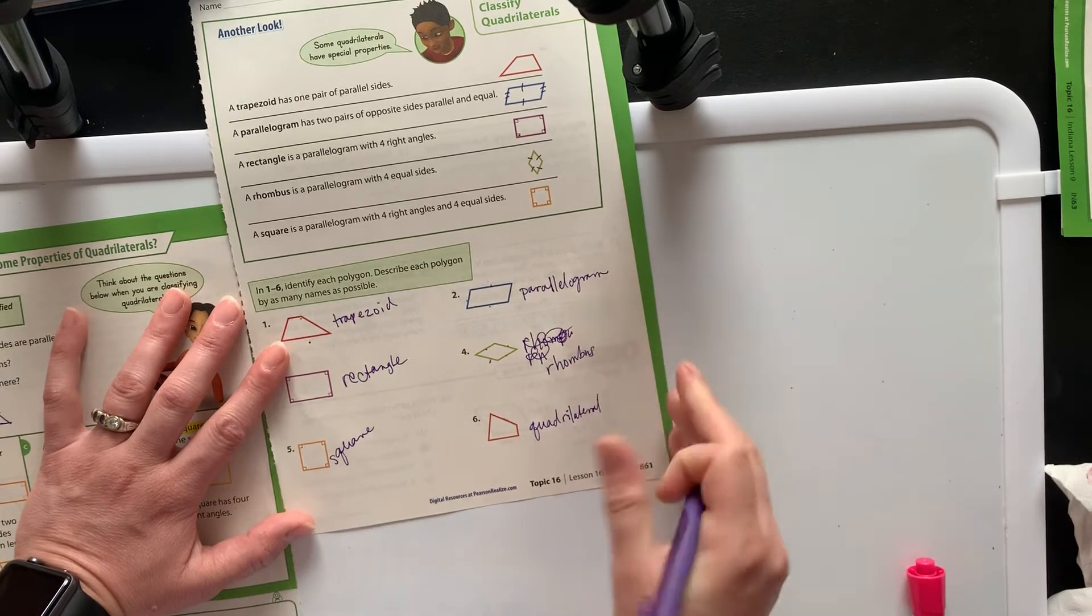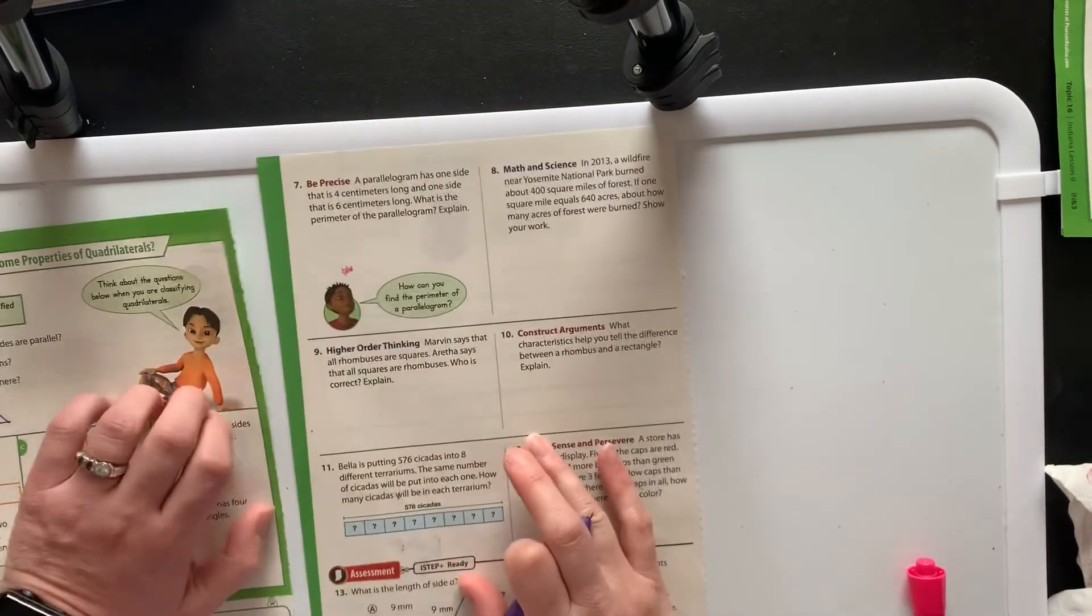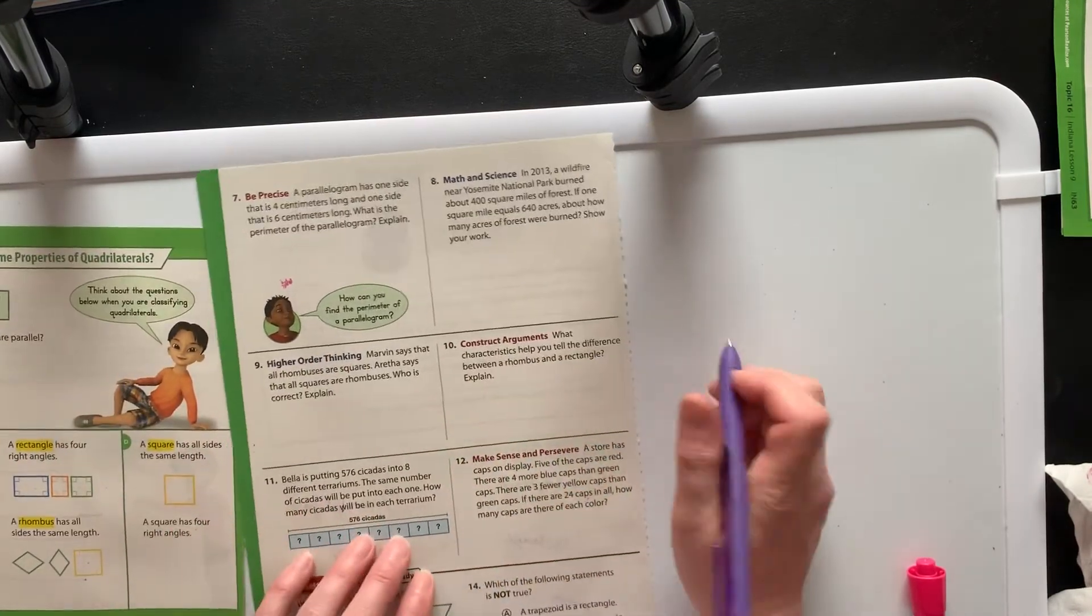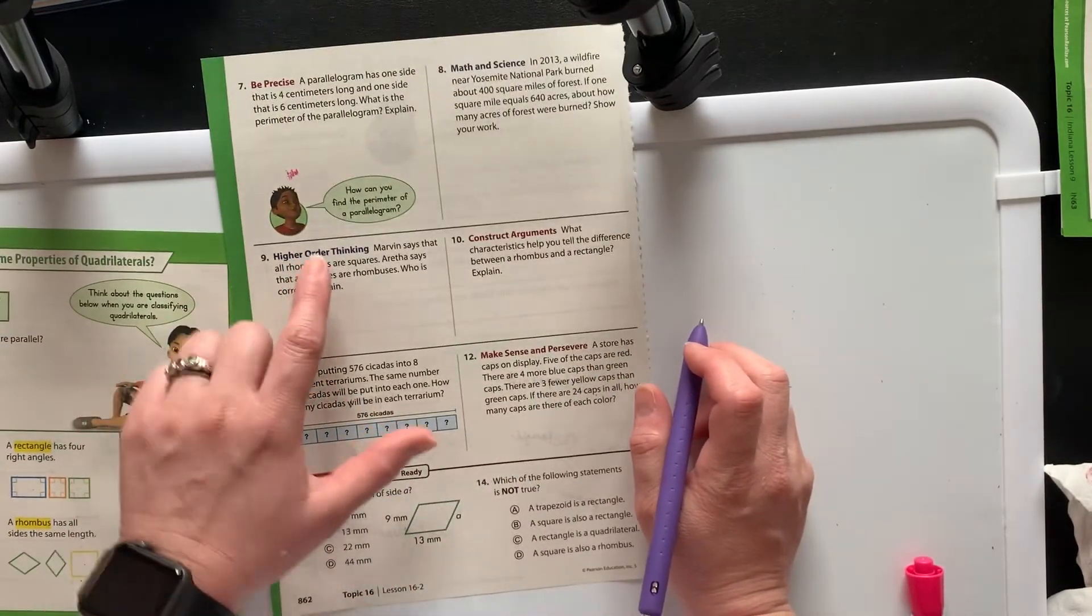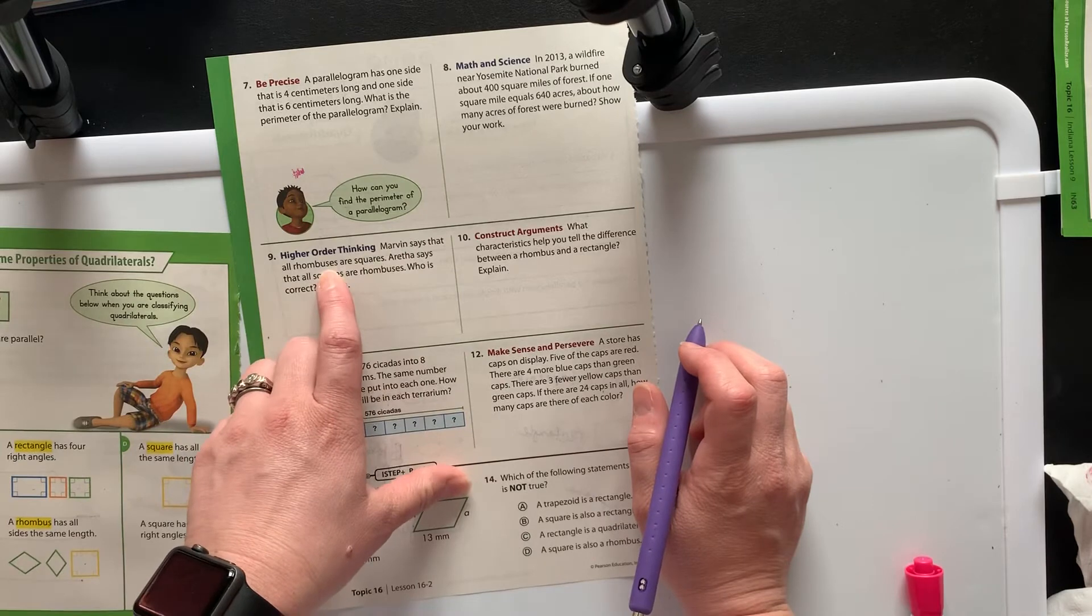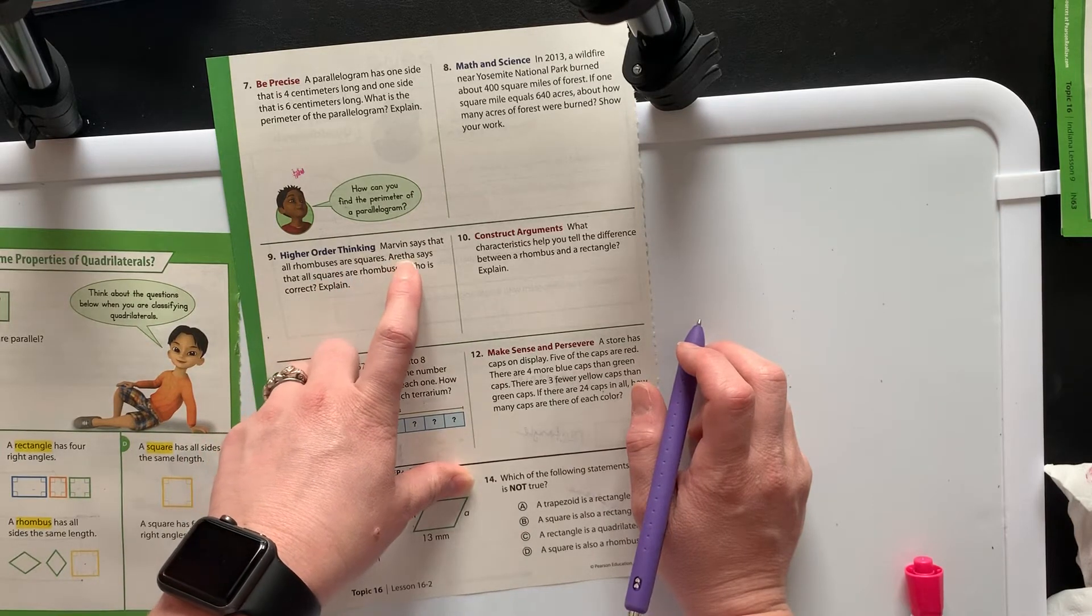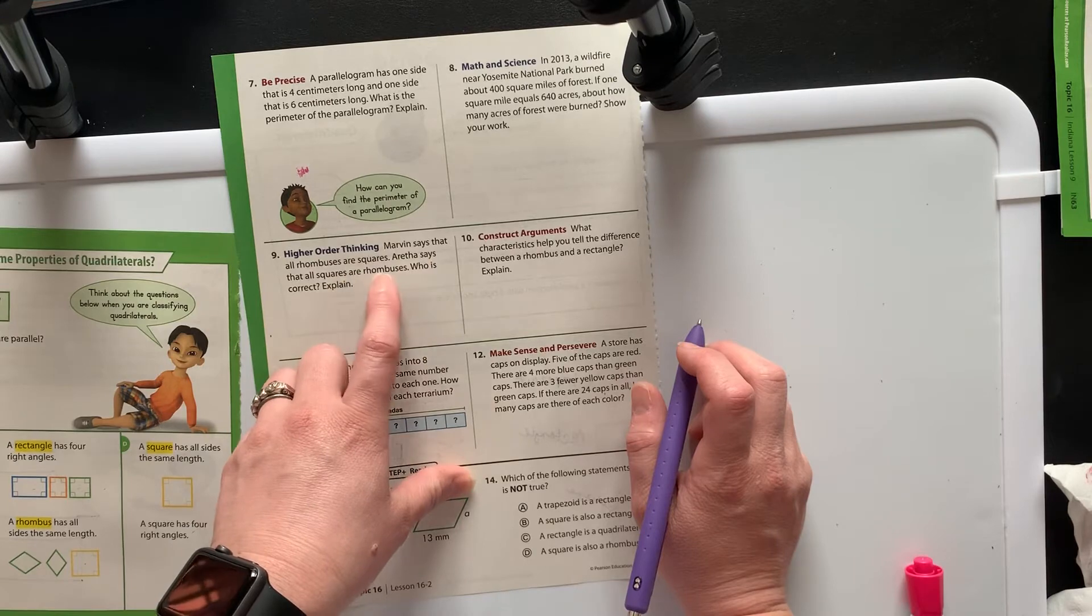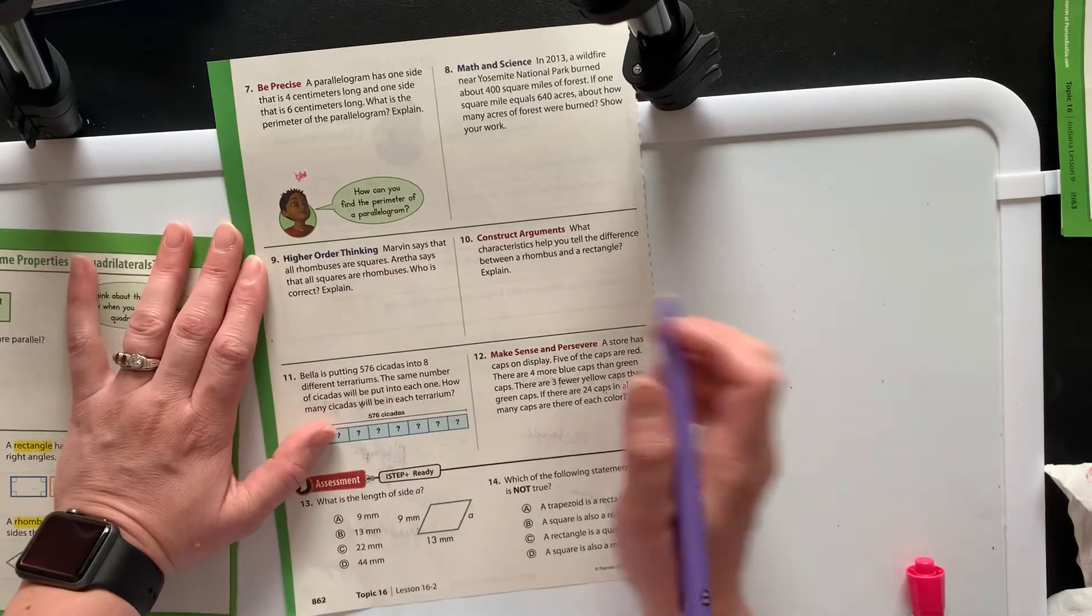Okay, we head over to the back where things get a little bit more difficult. This says Marvin says that all rhombuses are squares. Erythra says that all squares are rhombuses. Who is correct?